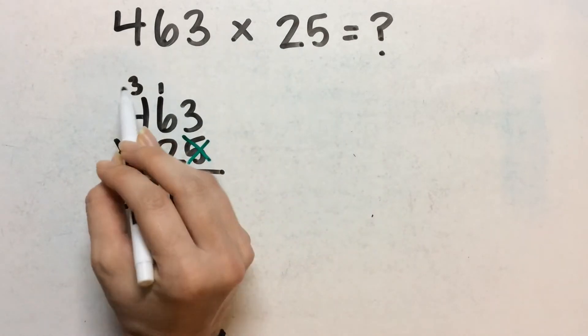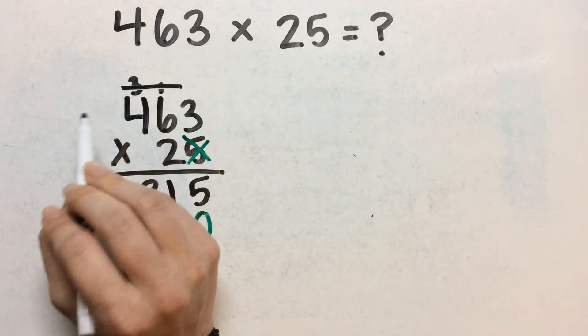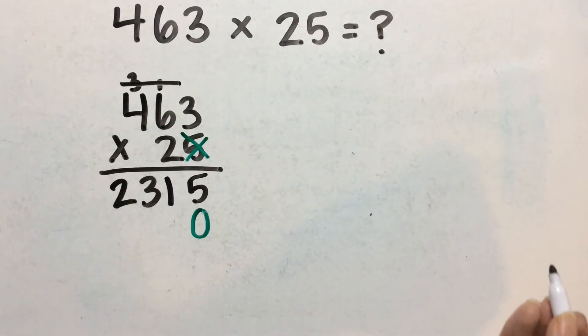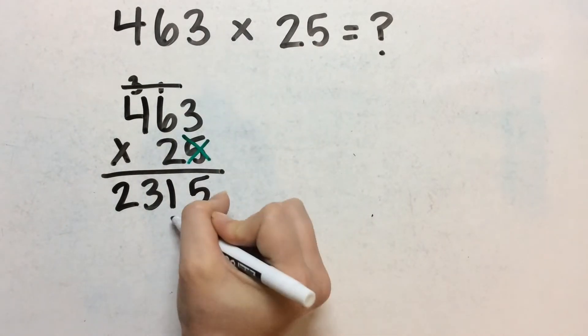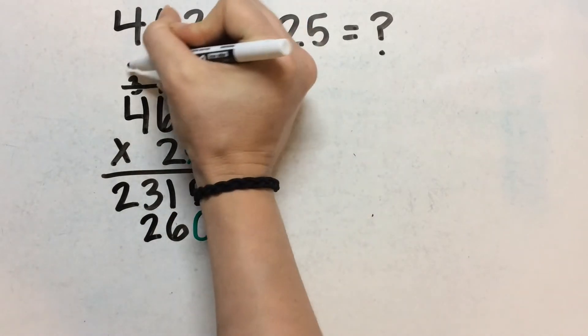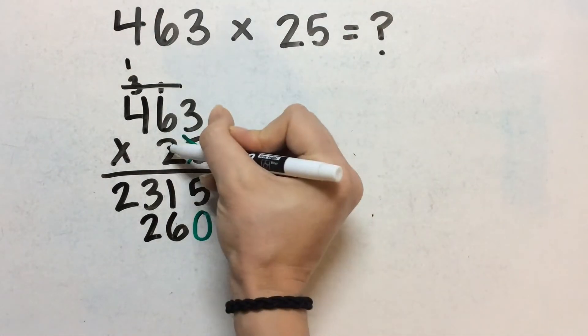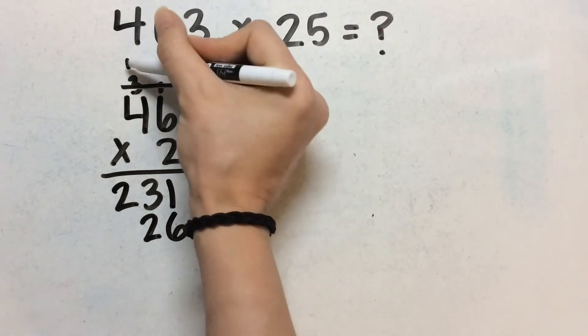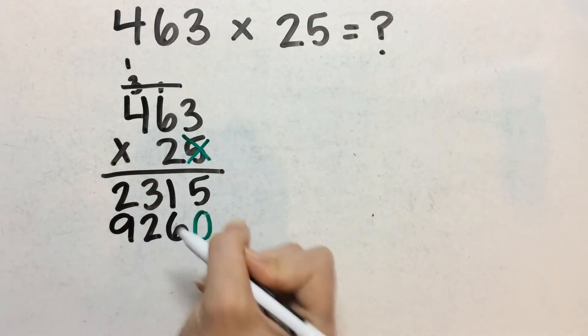So this zero makes it like we're multiplying by 20. And then you want to make sure to cross off these numbers that you carried so that you don't accidentally add them again. Two times three gives me six, two times six gives me 12. And then I want to carry my one, two times four is eight plus one more is nine.